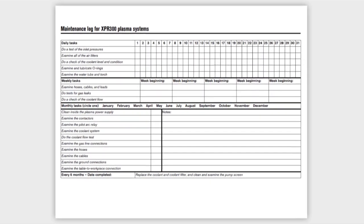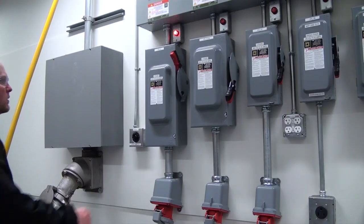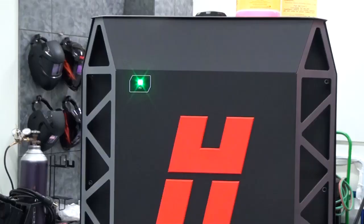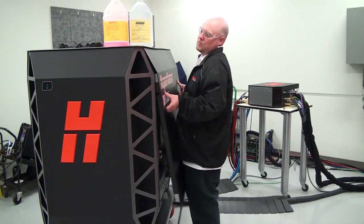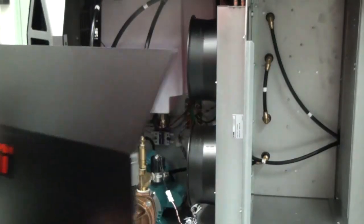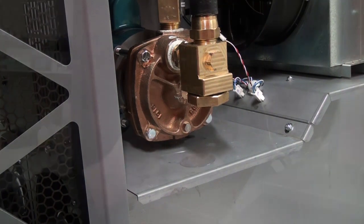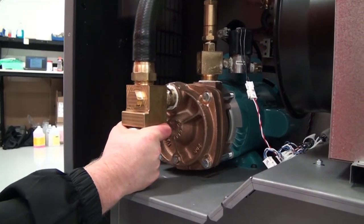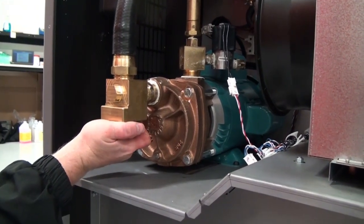We will start the inspection with the first item, clean inside the plasma power supply. Always make sure that power is removed from the power supply and allow time for any residual voltages to dissipate prior to removing any panels. Cleaning the inside of the power supply should be done before the inspection with the exception of coolant leaks. You will want to take note of any coolant leaks before cleaning so you can try to identify where the leak came from.